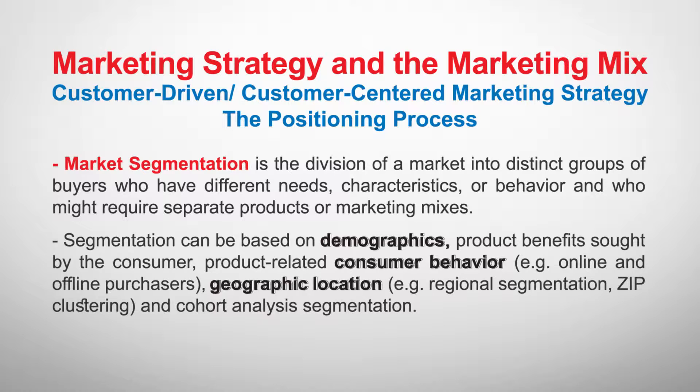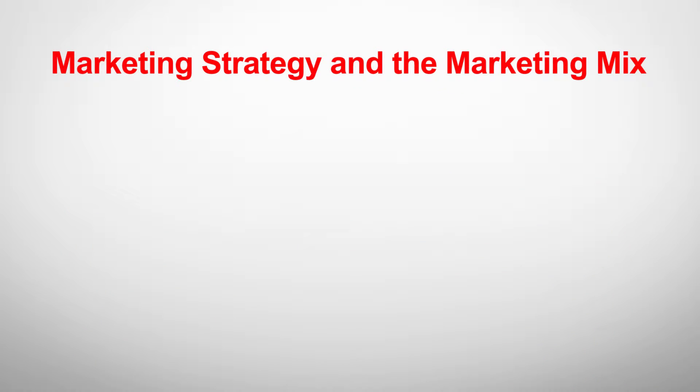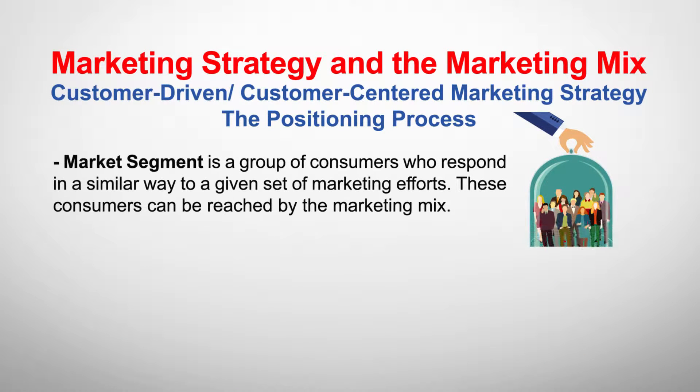We can also use geographic location to divide our customers. For example, if you are a clothing company, you cannot give people who live on the coast the same type of clothes you would give people who live in the mountains. The result of the market segmentation process is market segments — a group of customers who respond in a similar way to a given set of marketing efforts.